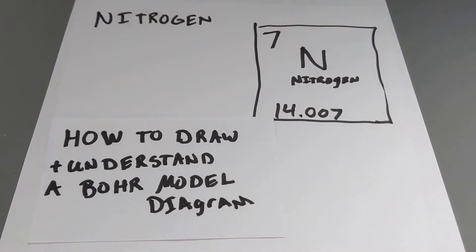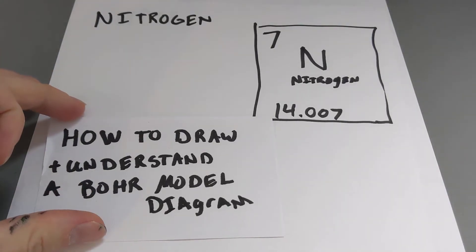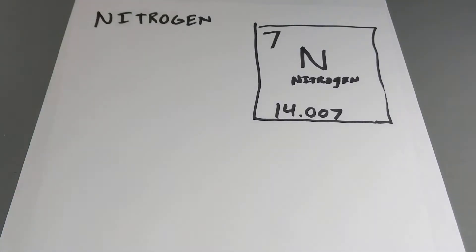All right, this is how you draw and understand a Bohr model or diagram. So, you're given an element, nitrogen.